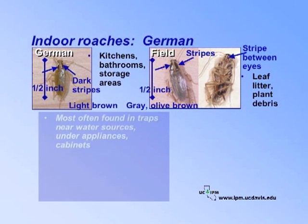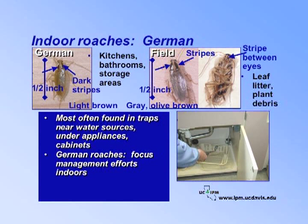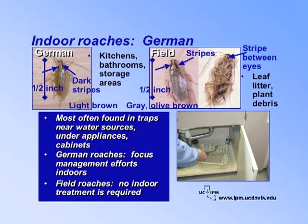You'll be more likely to find field roaches in traps near sink areas or other water sources, and under appliances and cabinets. German roach infestations will require you to focus management efforts indoors. Field roaches die quickly indoors, so no indoor treatment is required. If you do find them, focus efforts on keeping them out of buildings.